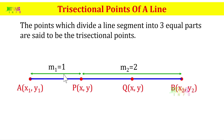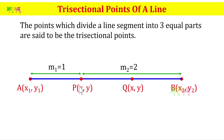Here we have three equal parts. This is one ratio and this is two ratio. The section formula is applied: M1 into x2 plus M2 into x1, by M1 plus M2. So we have a formula, and the section formula is applied. Let us find out P and Q coordinate values.